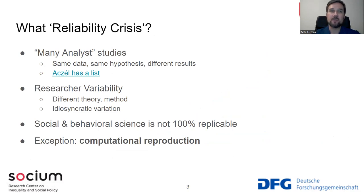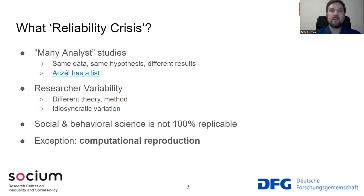There's a new genre of research called the many analysts study. In these studies, many researchers come together and are given the same data and asked to test the same hypothesis. Yet in almost all of these studies across all different disciplines, researchers come to a wide variety of results. There's a growing list of these studies held by Balazs-Uksu, with links available at the end of the video. Essentially, what we know is that there's researcher variability, because researchers often approach their work with a different theory, different method, and idiosyncratic approaches — resulting in variability in the results.